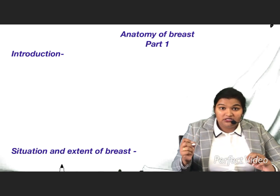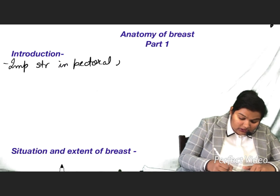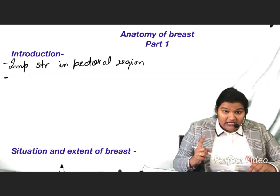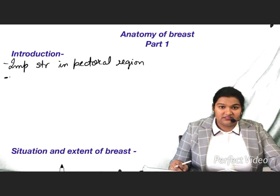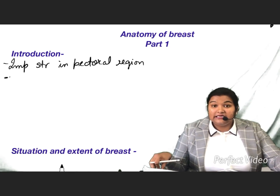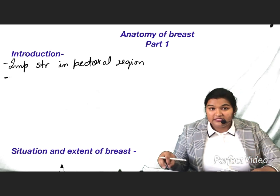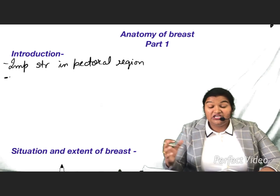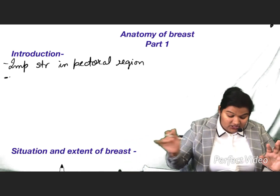Breast is an important structure present in the pectoral chest region. So why are we learning about the Anatomy of Breast? Because it has its clinical importance. CA breast has a high prevalence in females — carcinoma of breast is a prevalent cancer in females. So we need to know the Anatomy of Breast.